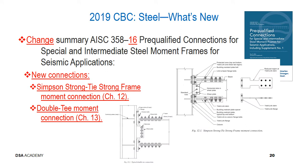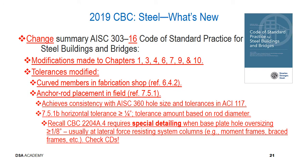For pre-qualified connections for special intermediate steel moment frames — AISC 358 2016 edition compared to the 2010 edition — there are now new connections specified: a Simpson Strong-Tie Strong Frame moment connection in chapter 12, and a double T moment connection in chapter 13. Regarding the code of standard practice for steel buildings and bridges, AISC 303 is now the 2016 version. Modifications have occurred to chapters 1, 3, 4, 6, 7, 9, and 10, with tolerances of interest to project inspectors.